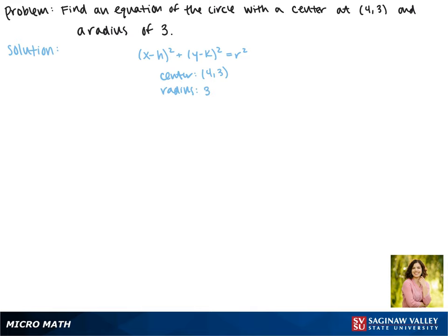Plugging this into our equation gives us x minus the x value of our center, which is 4, all squared, plus y minus the y value of our center, which is 3, squared, equals 3 squared, which is 9. So,